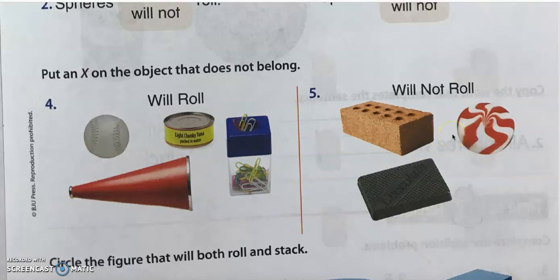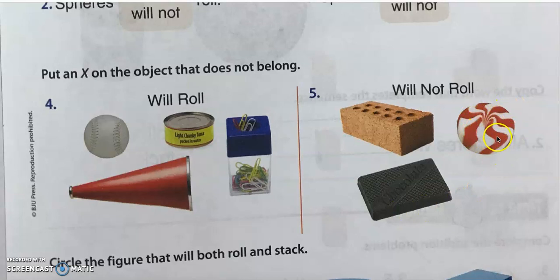Number five: will not roll. This one will not roll at all because it only has flat surfaces. But this candy over here has flat and curved surfaces, so it will roll. So this one does not belong here — put an X over here.